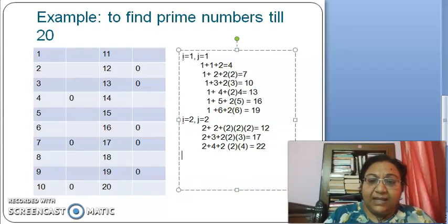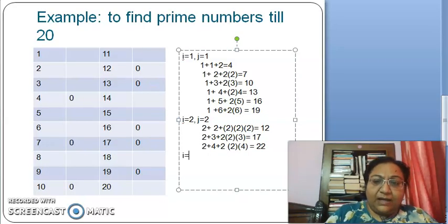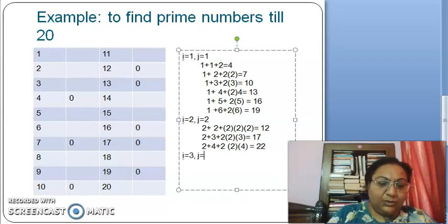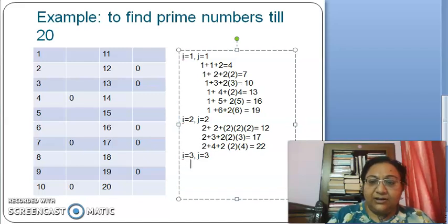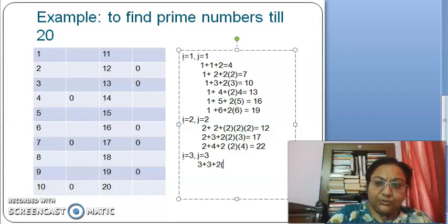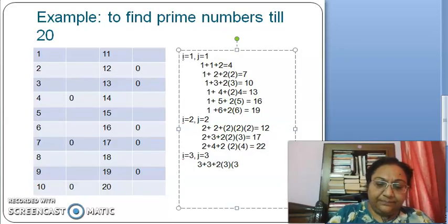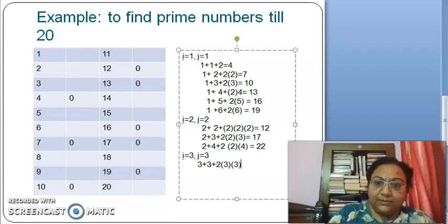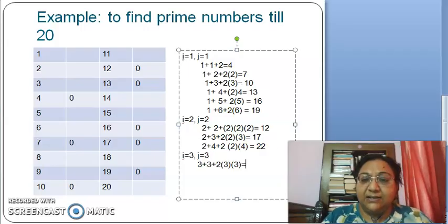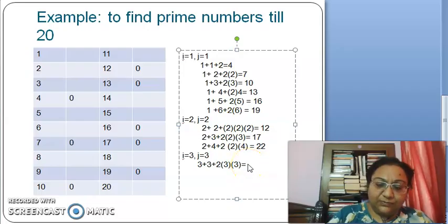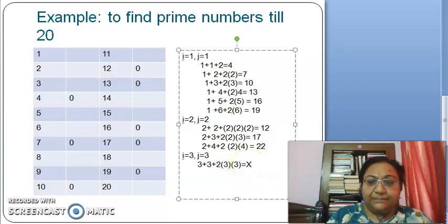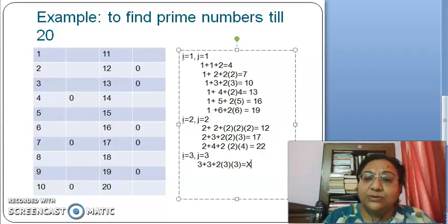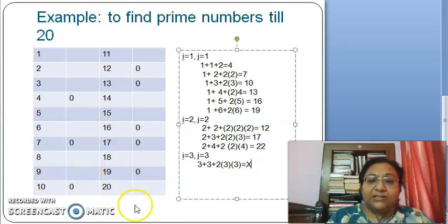We increment i to 3, and j starts from 3. When i=3, j=3: 3 plus 3 plus 2 times 3 times 3 equals 24, which is larger than 20. The loop stops here because all subsequent values will also exceed 20.